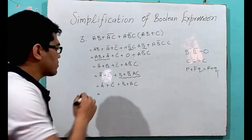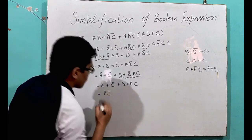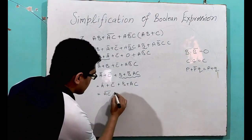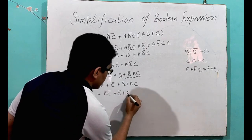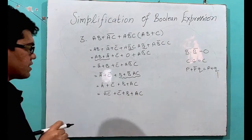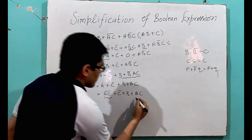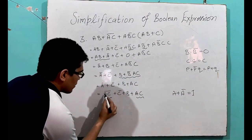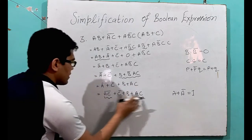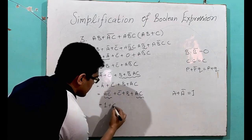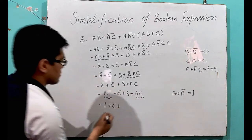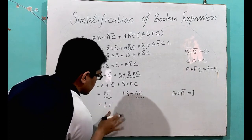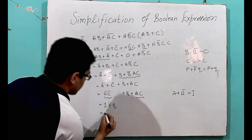Now this can be written as (AC)̄ — the De Morgan's law applied here. So this is Ā plus C̄ plus B plus AC. Now, what we are seeing here? AC̄ and AC — it means Ā plus A is 1. So AC̄ plus AC is nothing but 1. So we have 1 plus B, and 1 plus B is nothing but 1.